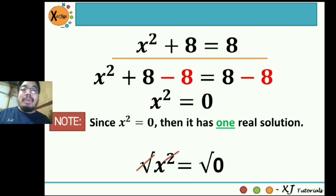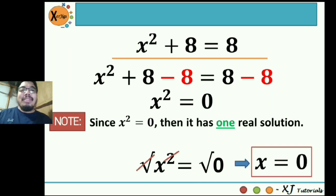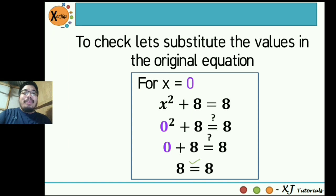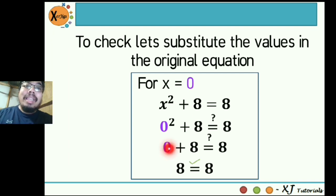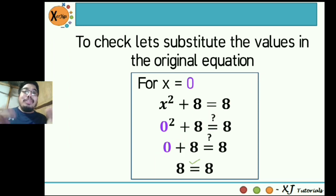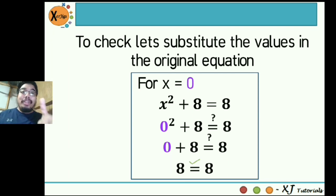Because the square root of 0 is 0. Let's check: for x equal to 0, the original equation is x squared plus 8 is equal to 8. So 0 squared is 0, and 0 plus 8 is equal to 8 — so therefore this is correct, this is a solution. So far, we already touched two properties: if k is greater than 0, there will be two real solutions; if k is equal to 0, there is only one solution.